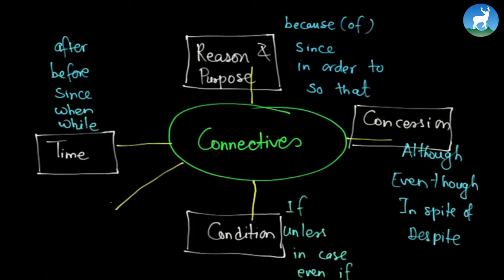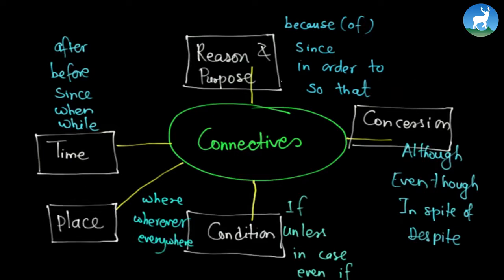We do have another set also. In that set we use words like 'where', 'wherever', or sometimes 'everywhere', and these come under a special topic called place connectives. So how many types of connectives did we study in this part? We studied about five different connectives. But there are more types, like connectives of manner and others. But let's talk about this much only for now.